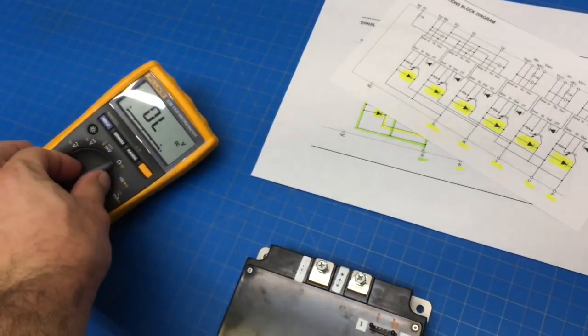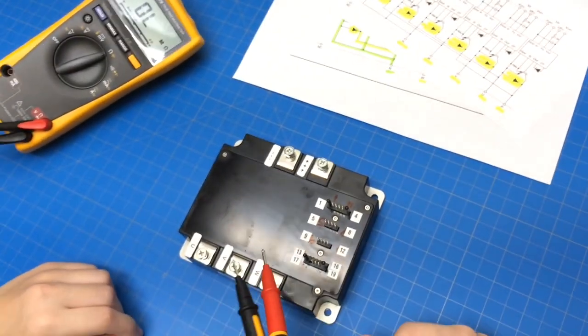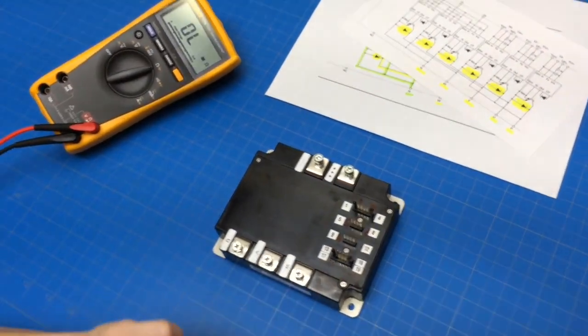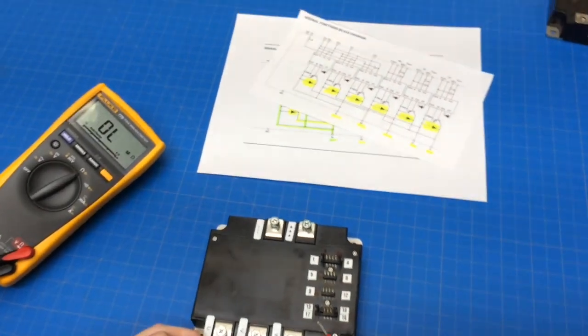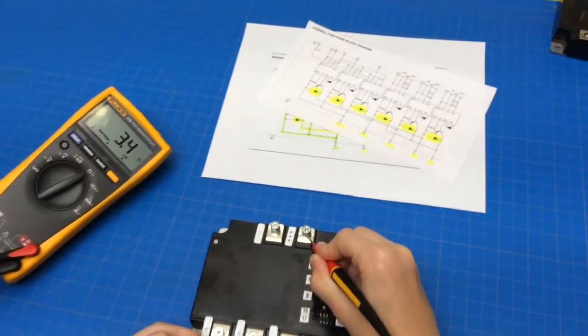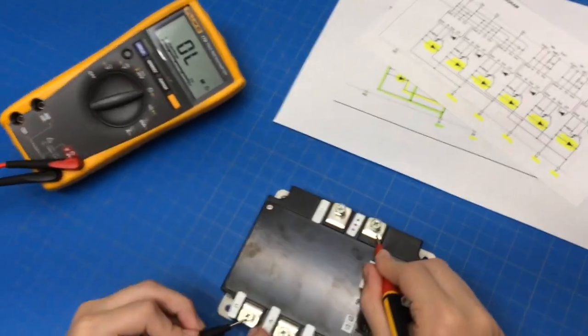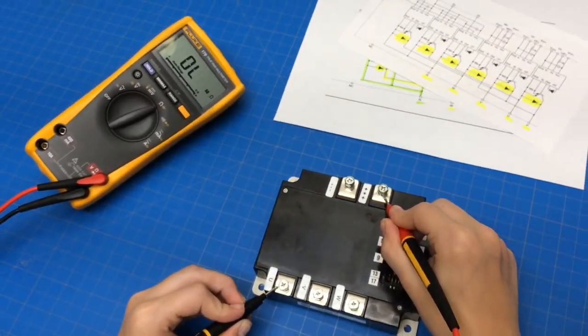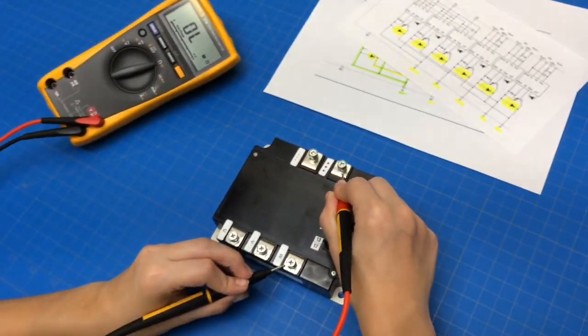It'll even read on ohms if we just ohmed it out. Go positive to V on ohms and you'll see that it's bad. So, here's positive. And, that's not good. It shouldn't read like that. So, go to any other one. Keep that on positive and go here. See. So, you can see that that one's not good.